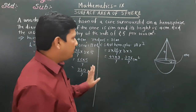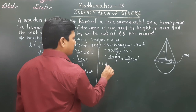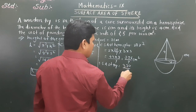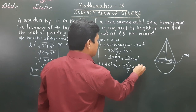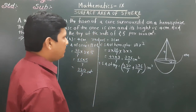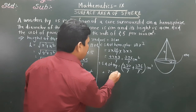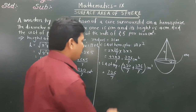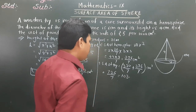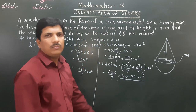Now we sum both curved surface areas. Total surface area of the toy = 330/7 + 396/7 = 726/7 ≈ 103.71 cm².